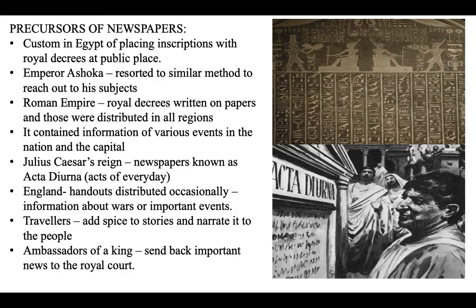Precursors of newspapers: A precursor is something that comes before — the forerunner. Before the beginning of the Common Era, there was a custom in Egypt of placing inscriptions with royal decrees at public places. A decree is a command or order by the king. Emperor Ashoka also resorted to similar methods to reach out to his subjects. In the Roman Empire, royal decrees were written on papers and distributed in all regions, also containing information about various events taking place in the nation.